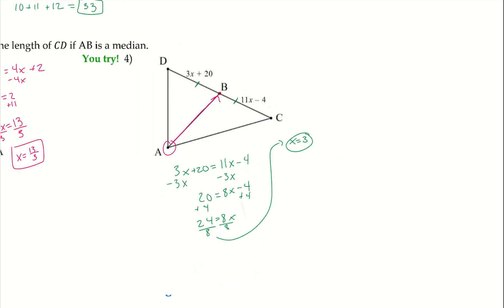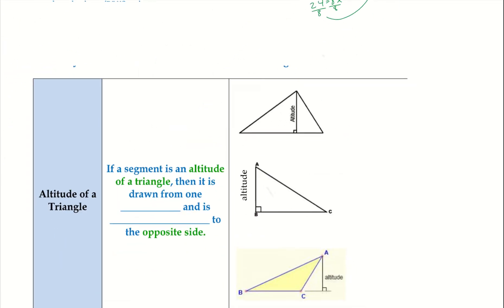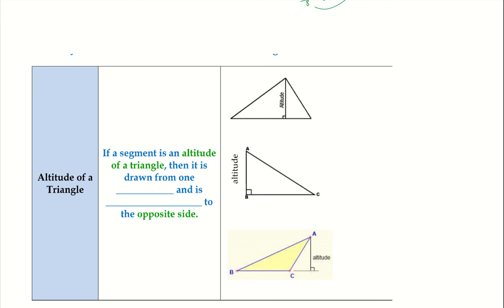Let's go ahead and learn a little bit about altitudes. If a segment is an altitude of a triangle, then it is drawn from one vertex and is perpendicular to the opposite side. Remember when we have something that is perpendicular, it creates a right angle. And so remember, right angle is 90 degrees.